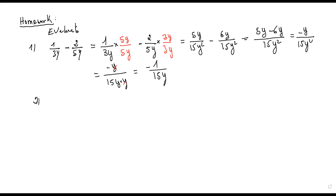The second one: three t plus one over two, plus one over t.